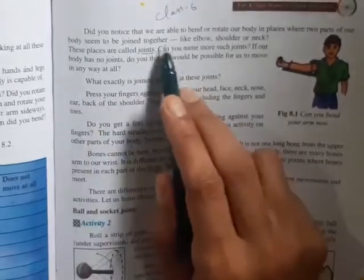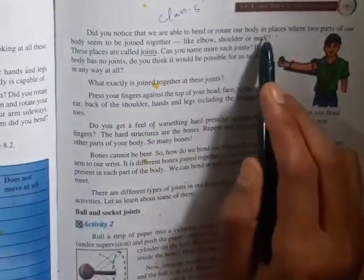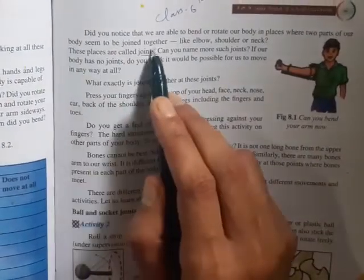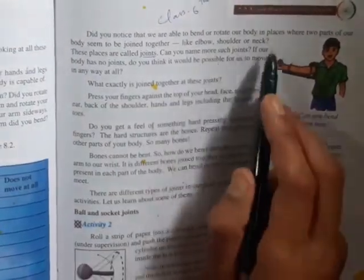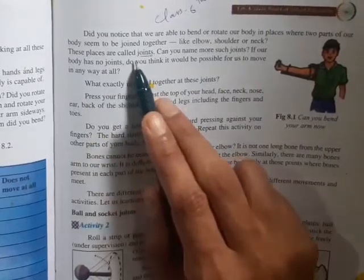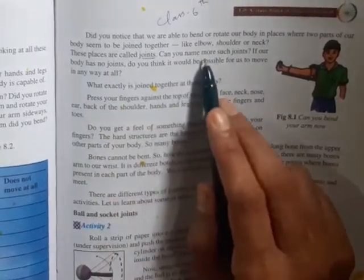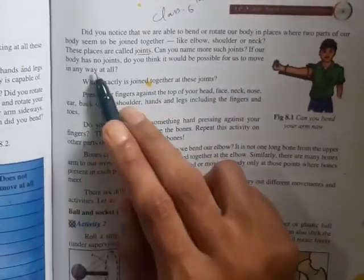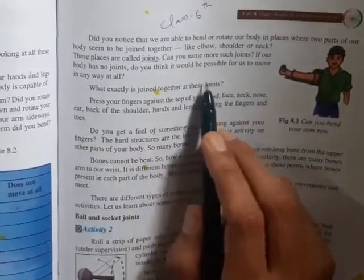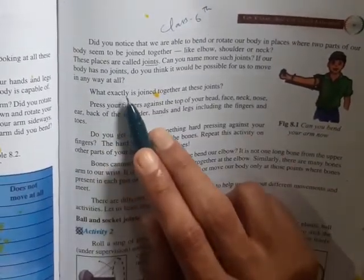Did you notice that we are able to bend or rotate our body in places where two parts of our body seem to be joined together like elbow, shoulder or neck? These places are called joints. Can you name more such joints? If our body has no joints, do you think it would be possible for us to move in any way at all?